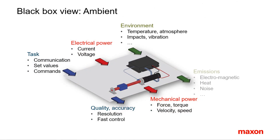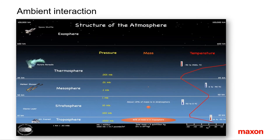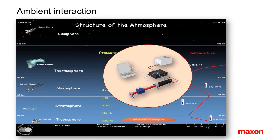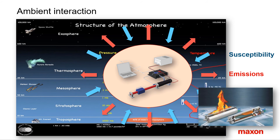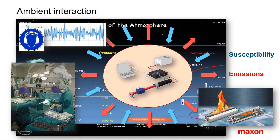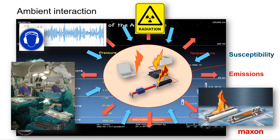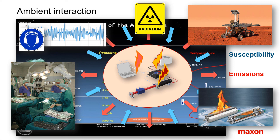The last black box consideration covers environmental aspects and boundary conditions — generally, the interaction and interference with the ambient. On one hand, any system has emissions that influence and even disturb the surrounding environment. On the other hand, any system is susceptible to ambient conditions. Special conditions and requirements include temperature, noise, vibration and shock, sterilization, ionizing radiation, and electromagnetic interference. Space applications combine many of these special ambient conditions, including vacuum.